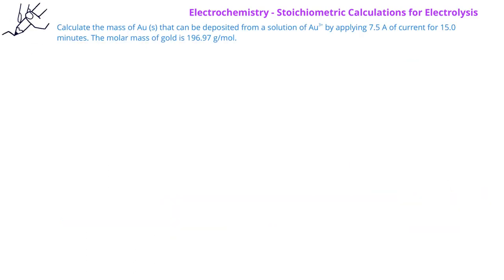In this problem, we're asked to calculate the mass of gold metal that can be plated from a solution of gold 3+ ions by applying 7.5 amps of current for 15.0 minutes. We're also given that the molar mass of gold is 196.97 grams per mole.